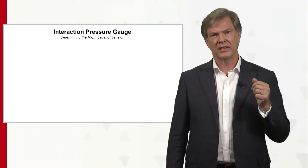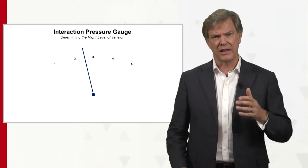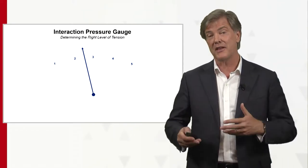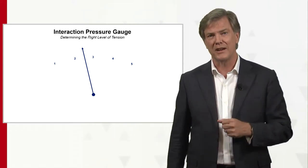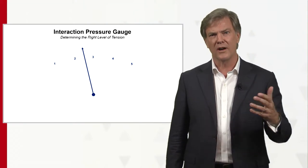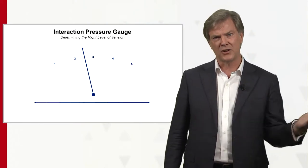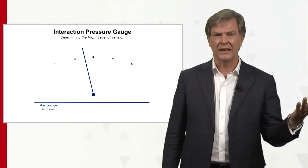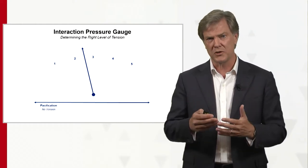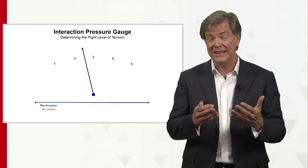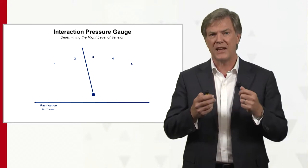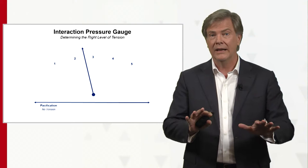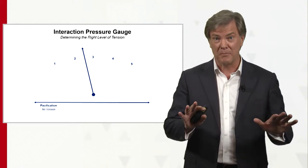The model distinguishes between a very low and a very high level. That's why we created a pressure gauge, going from one to five along a continuum. On one side, there's no pressure at all — no tension in the conversation. We call it pacification: you're actually trying to pacify things, keep things quiet. So let's not bring it up — no pressure at all.